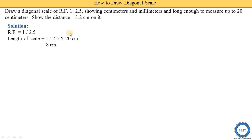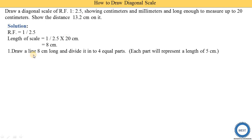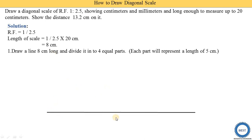In earlier problems, we understood that when the maximum distance is given in kilometers it needs to be converted to centimeters. Here, we draw a line 8 centimeters long and divide it into four equal parts. Each part will represent an actual length of 5 centimeters. The 8-centimeter long line represents a total actual distance of 20 centimeters, divided into four equal parts.